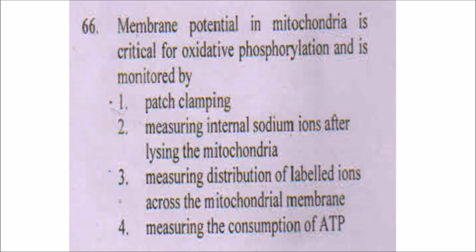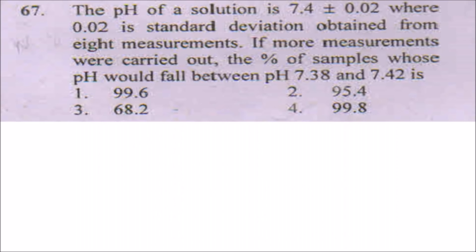The next question is: membrane potential in mitochondria is critical for oxidative phosphorylation and is monitored by which method? We monitor membrane potential with the help of patch clamping technique, where we use a micropipette to pinch out a very small portion of membrane containing sodium-potassium pumps or ion channels.